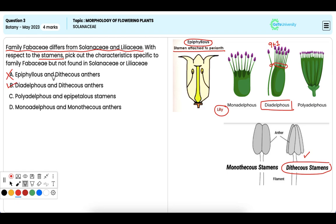Option C: Polyadelphous and Epipetalous stamens. It is incorrect. Polyadelphous stamens, that is grouped into more than two bundles, are not characteristic of Fabaceae.